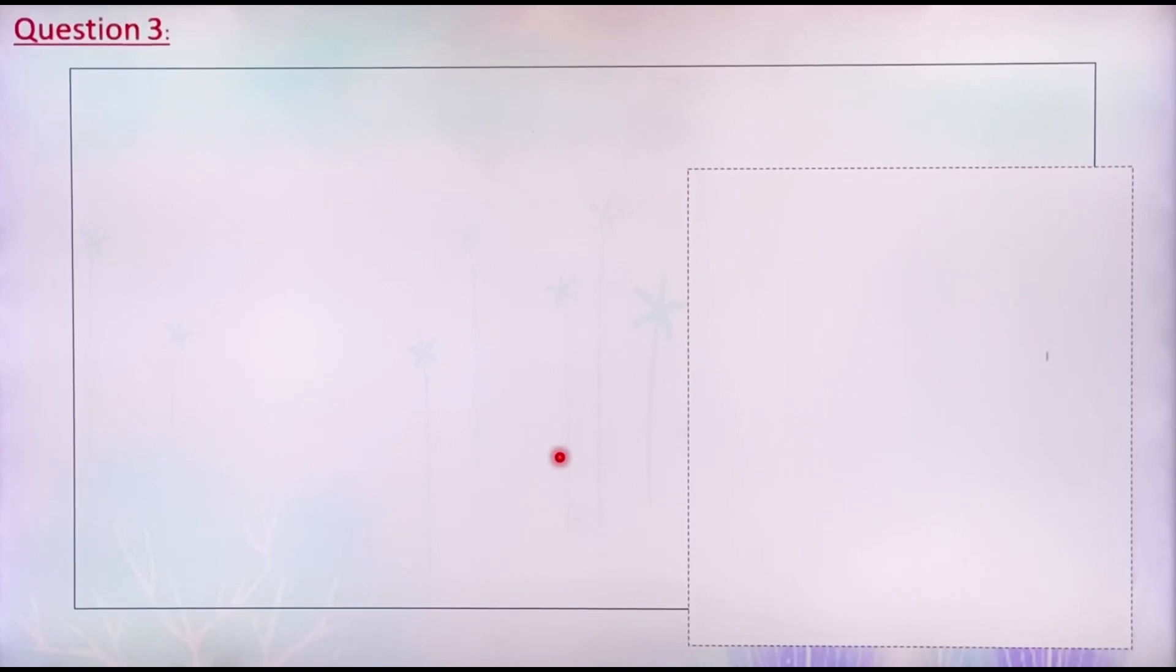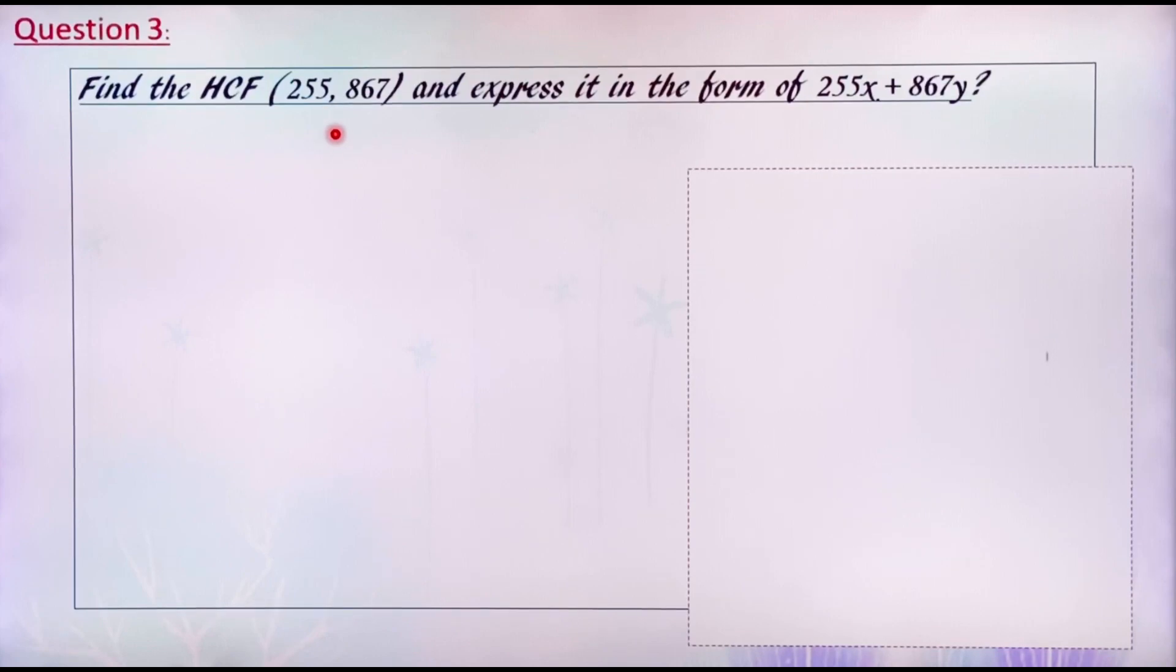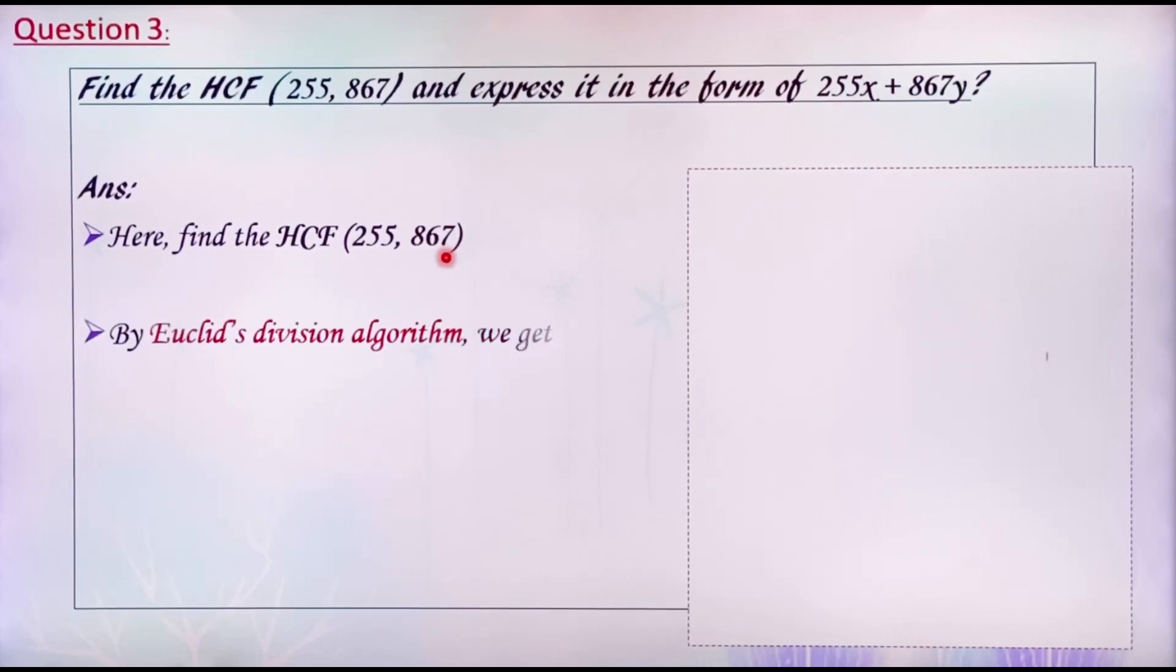Now, moving to the third question. Find the HCF of 255 and 867 and express it in the form of 255x plus 867y. To solve this question, first find the HCF of 255 and 867. For that, divide 867 by 255. By Euclid's division algorithm, we get 867 equals 255 into 3 plus 102. This is taken as equation 1.